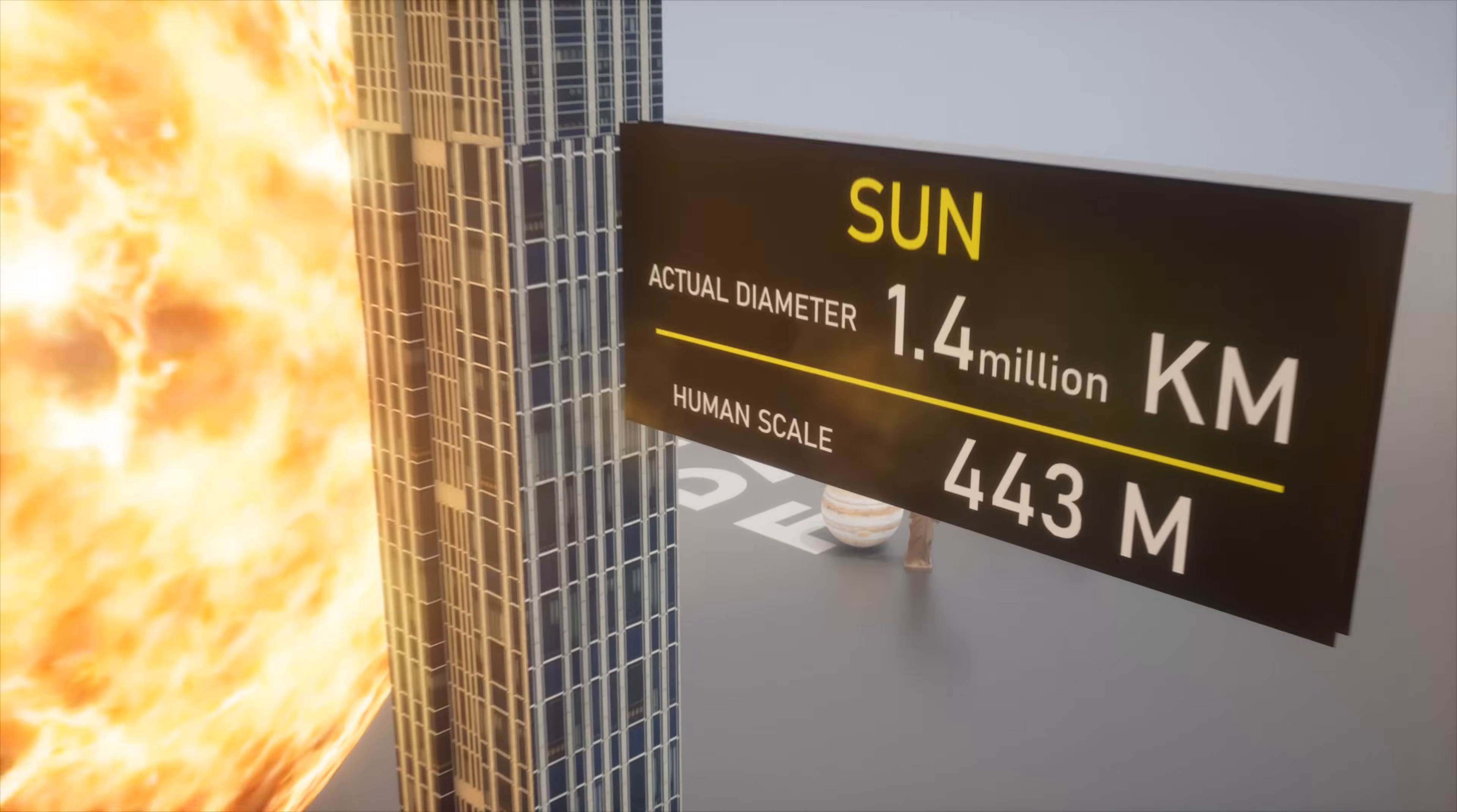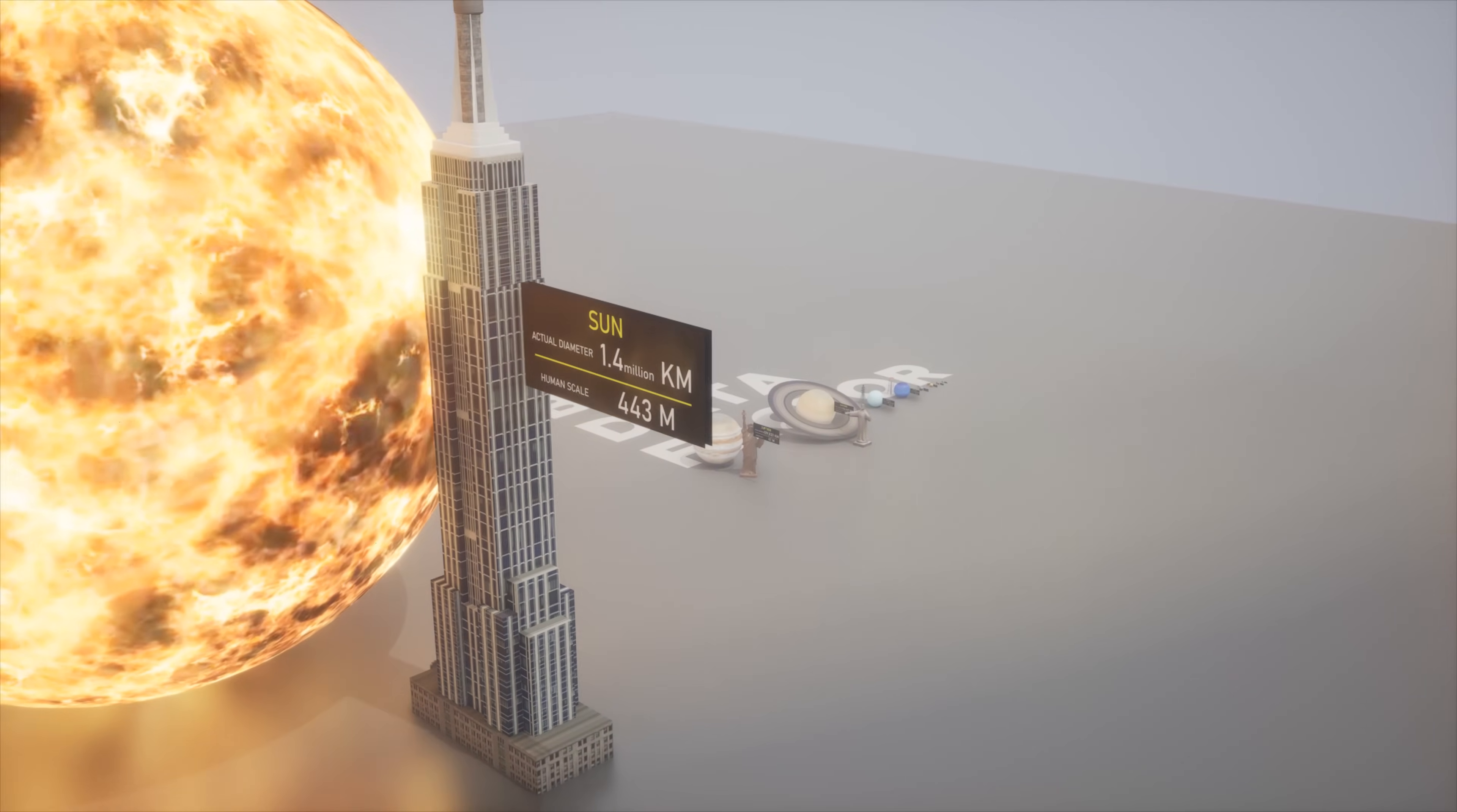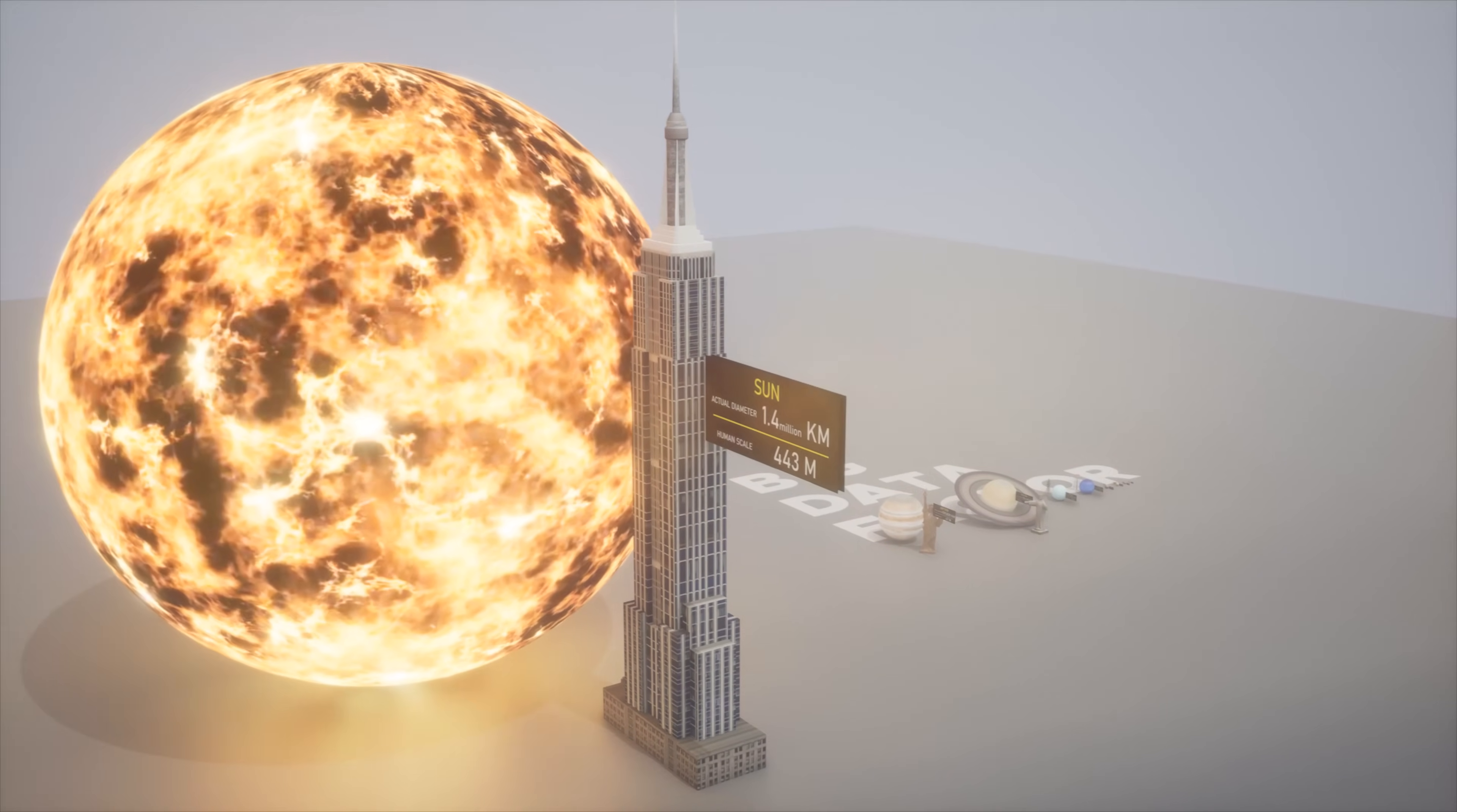Lastly, we arrive at the mighty Sun, the heart of our solar system. Imagine the Empire State Building towering above the cityscape, that's the scale of the Sun on our human level. This comparison truly emphasizes the enormous role the Sun plays in our lives and the universe as a whole.